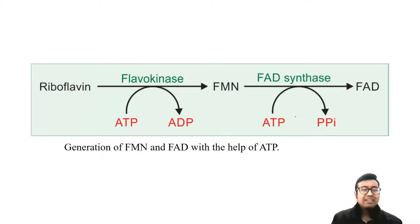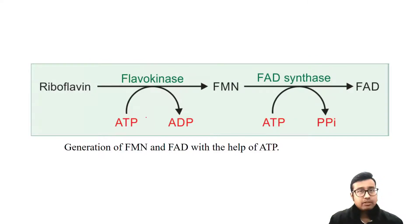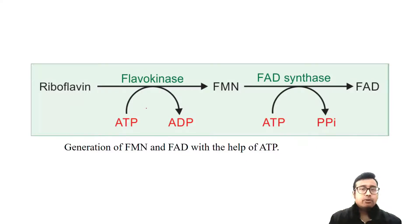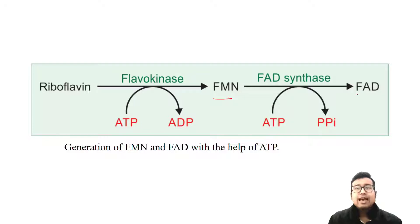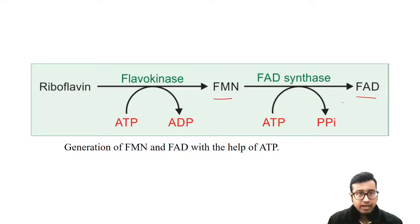What you need to know is the active principle — the active coenzyme forms of riboflavin. That is FMN, flavin mononucleotide, and FAD, flavin adenine dinucleotide. So FMN and FAD are what's important.